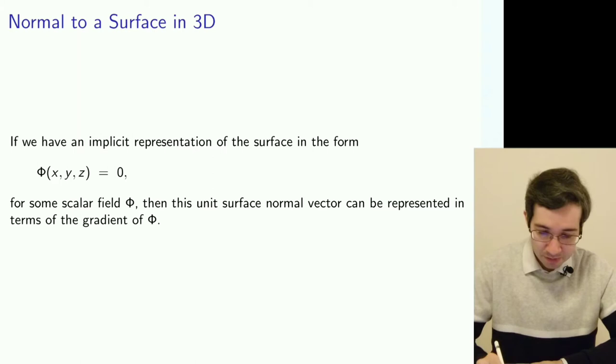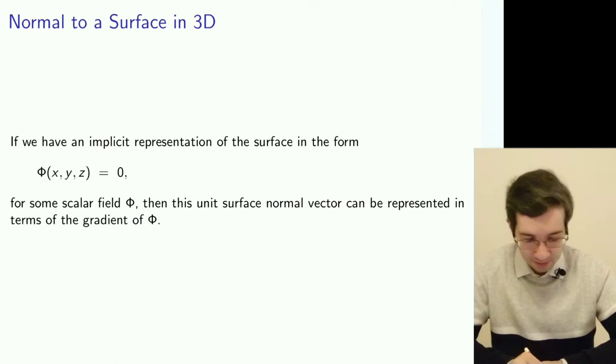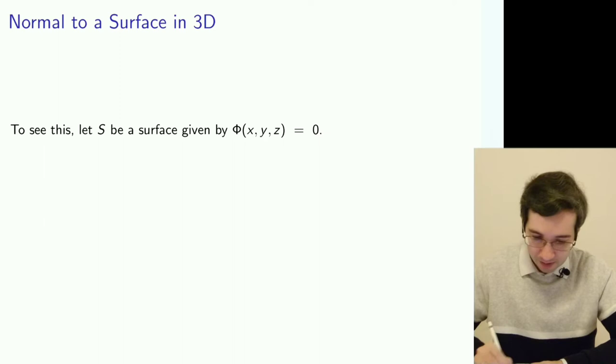If we use an implicit representation Φ(x, y, z), then it turns out that the unit normal vector, which we call n, can be related to the gradient of that expression for the surface. Why is that? Well, first of all, let's just consider that that's how we describe our surface.